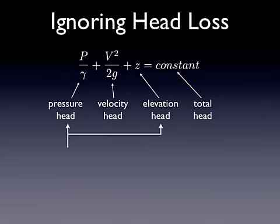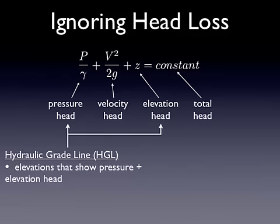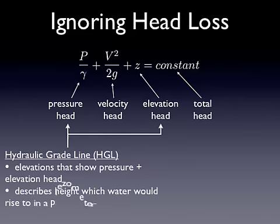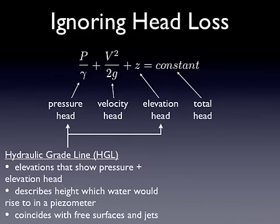Now if we think about just the pressure head and the elevation head combined, those things combine to form the hydraulic grade line. And it's typically abbreviated HGL in technical drawings. So the hydraulic grade line, these are simply the elevations that show the pressure head plus the elevation head. In a more physical manner, it describes the height that water would rise to if that system was open to the atmosphere. So consequently, it coincides with all free surfaces and jets. So this is a necessary design element of any complex water system.